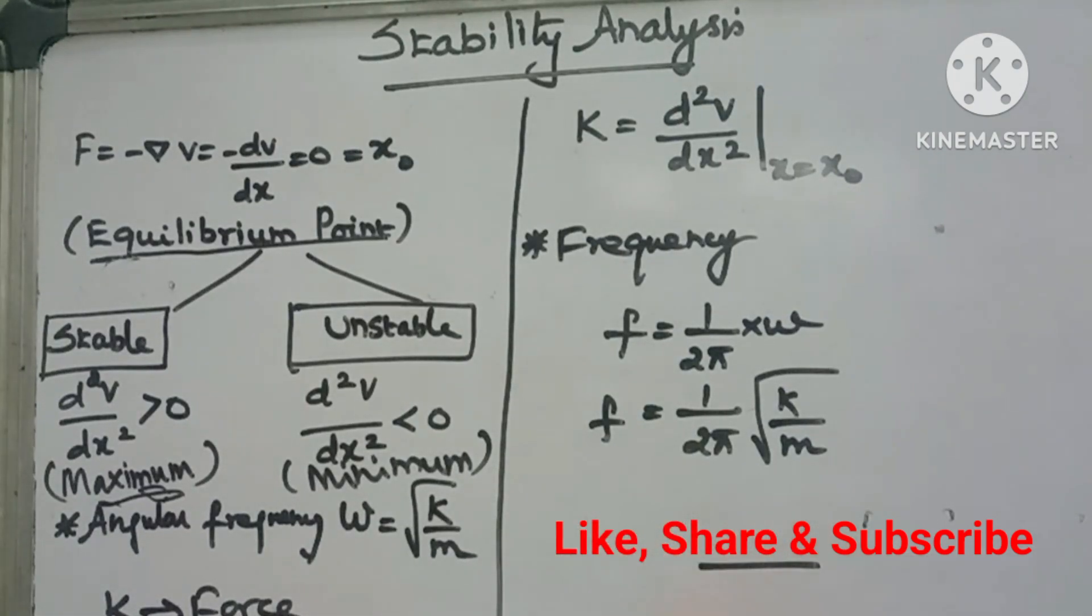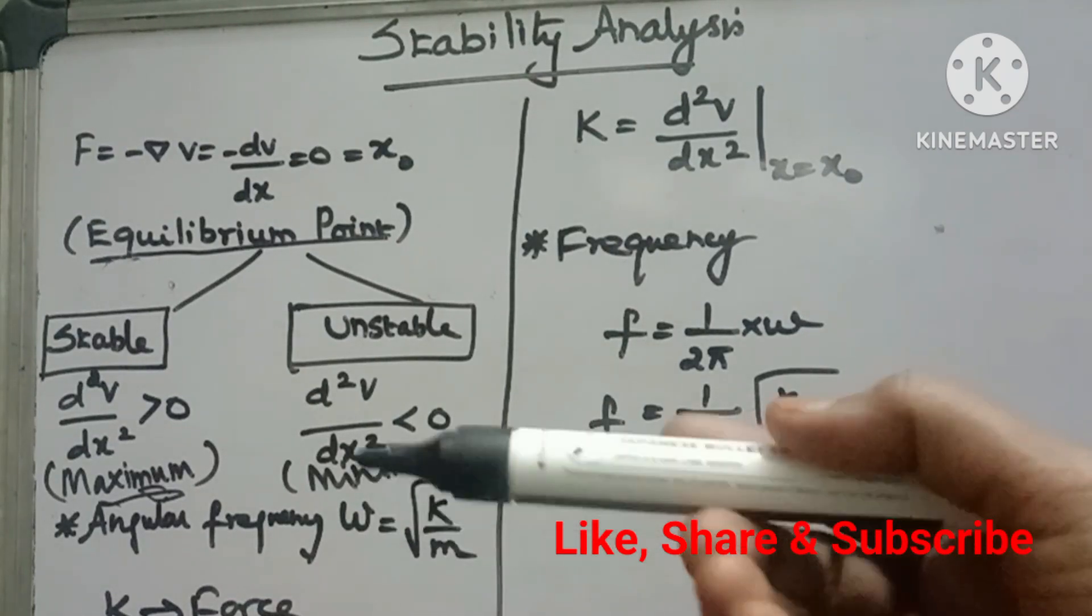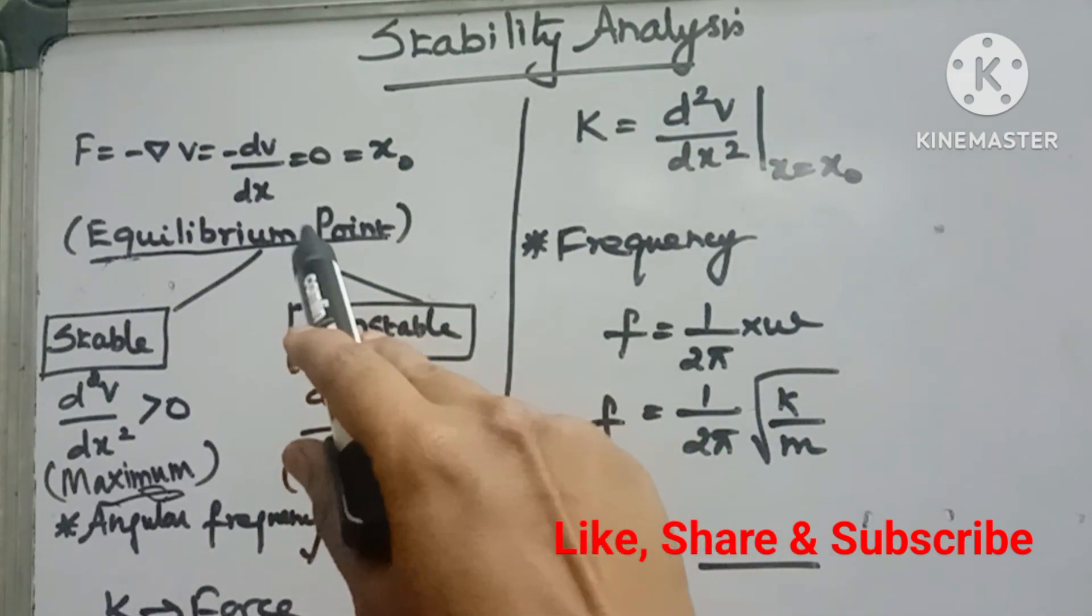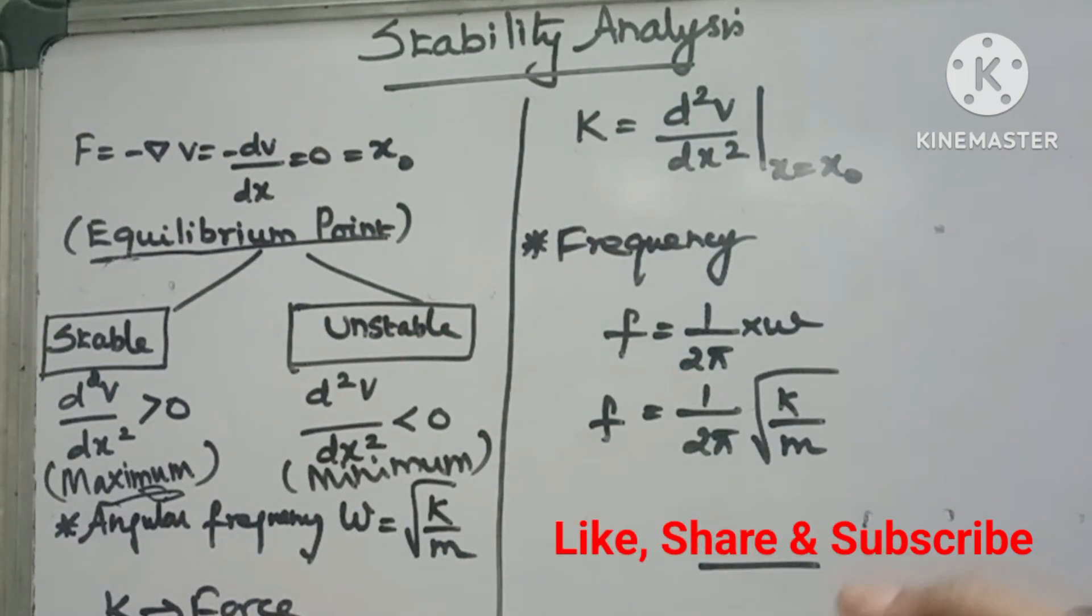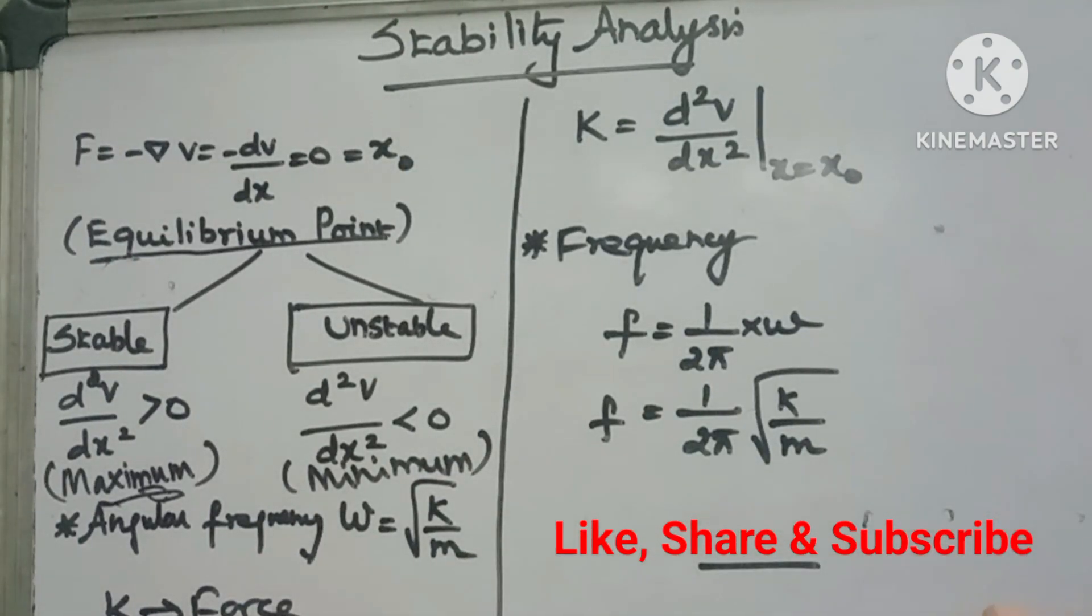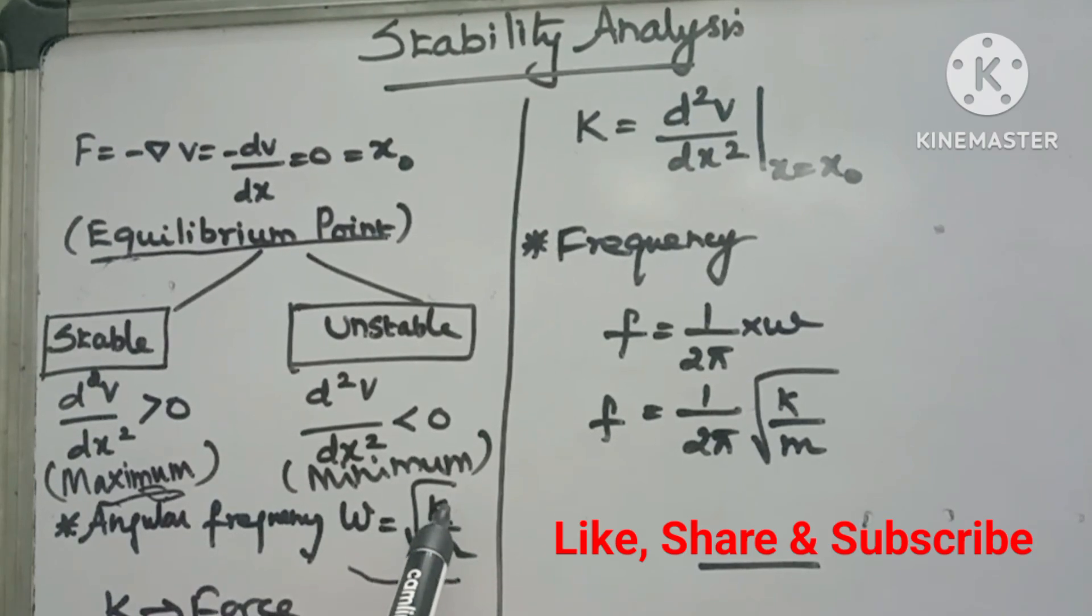For the object, for example a pendulum, the formula is angular frequency ω = √(k/m), where k refers to force constant.